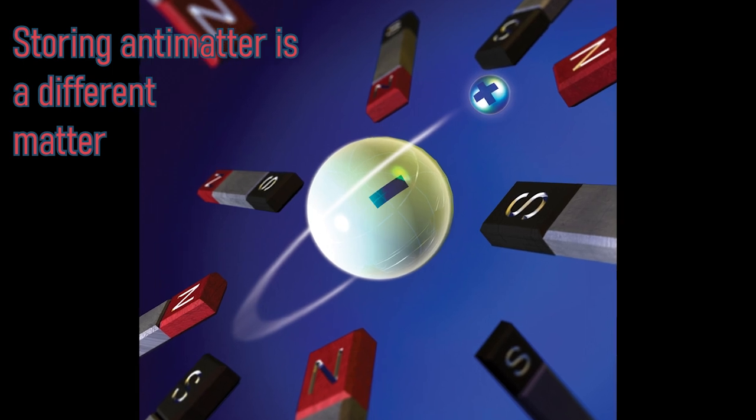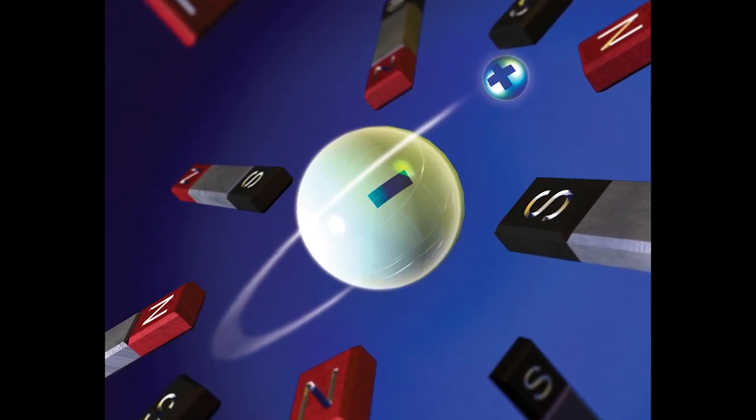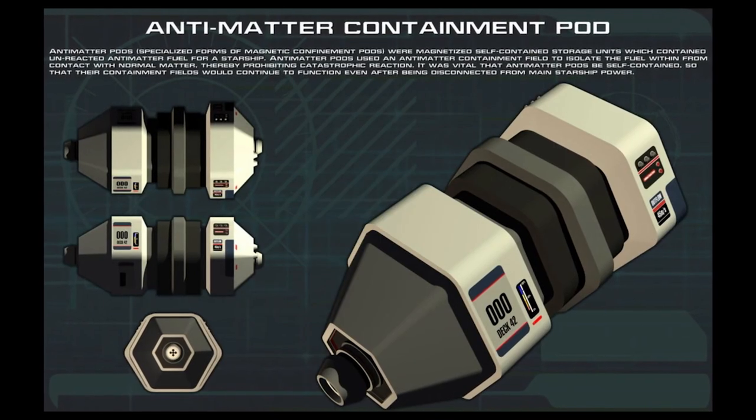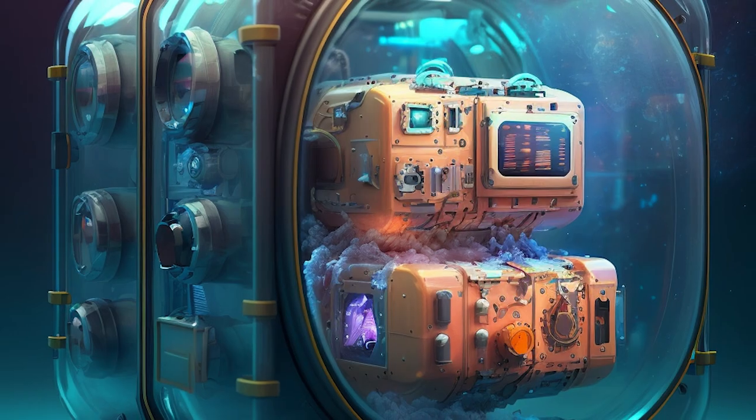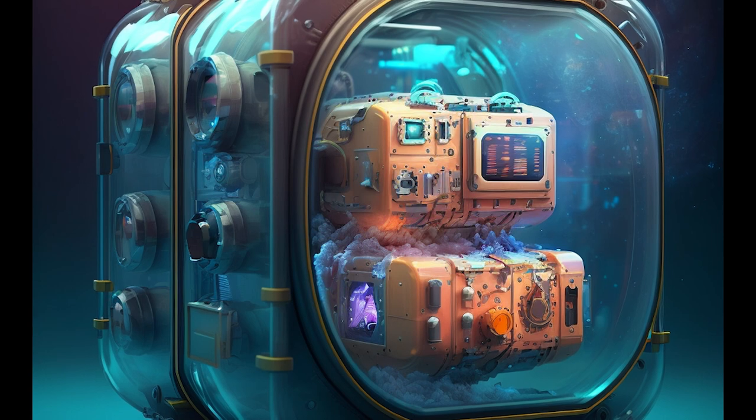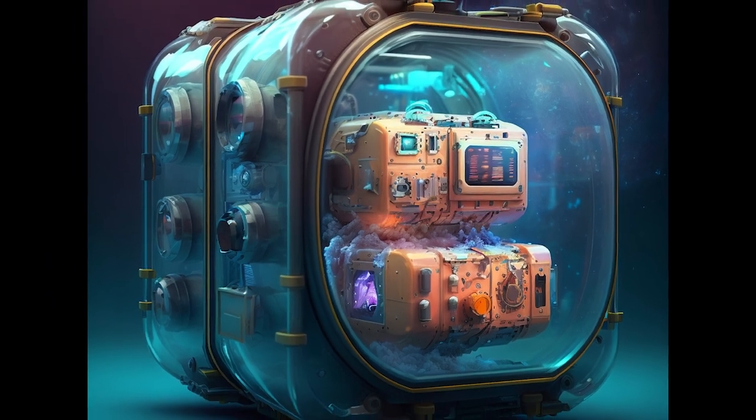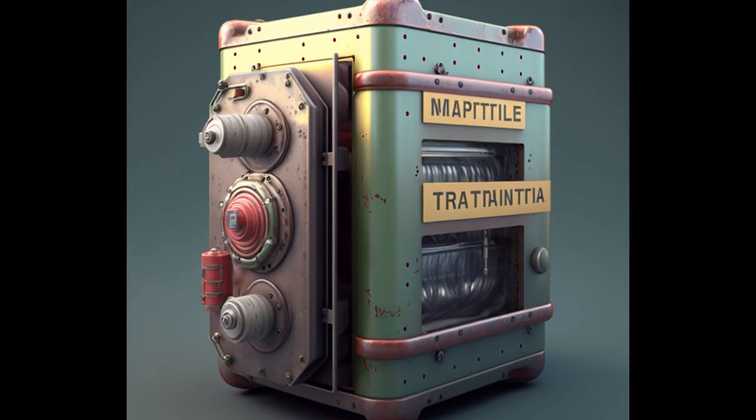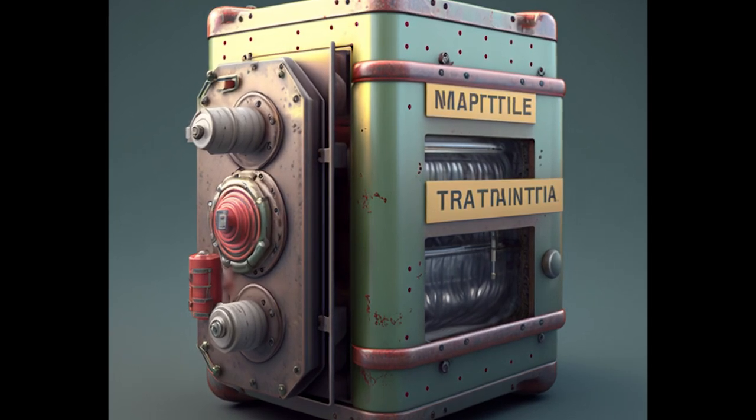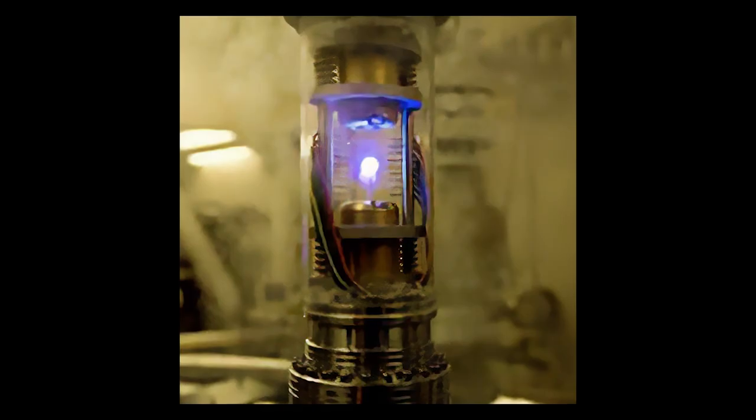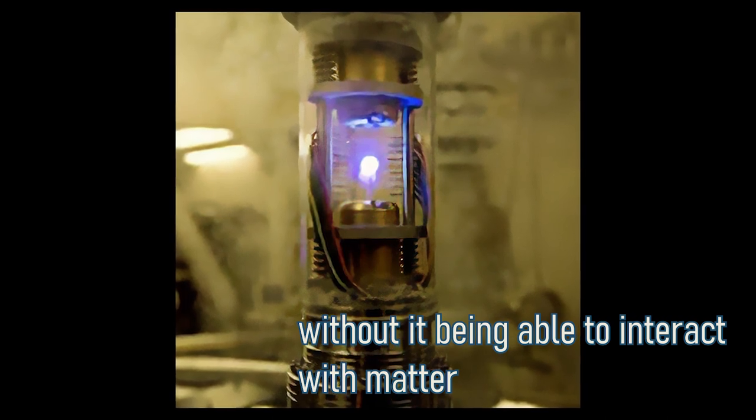Producing antimatter is hard enough. Storing it is a completely different matter. For any usage as a weapon, fuel, or energy source, antimatter would need to be stored in a stable environment until needed. Generally in sci-fi, this is managed through magnetic fields with batteries on them that are able to contain antimatter, pushing it away from regular matter to prevent it reacting. Therein lies the challenge, storing it without it being able to interact with nearby matter.